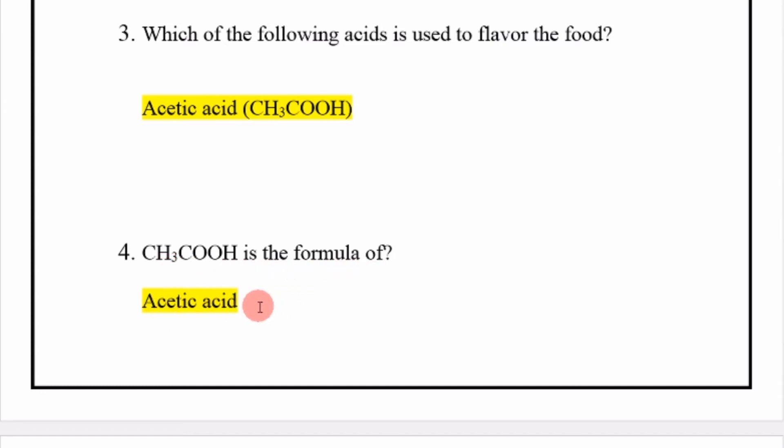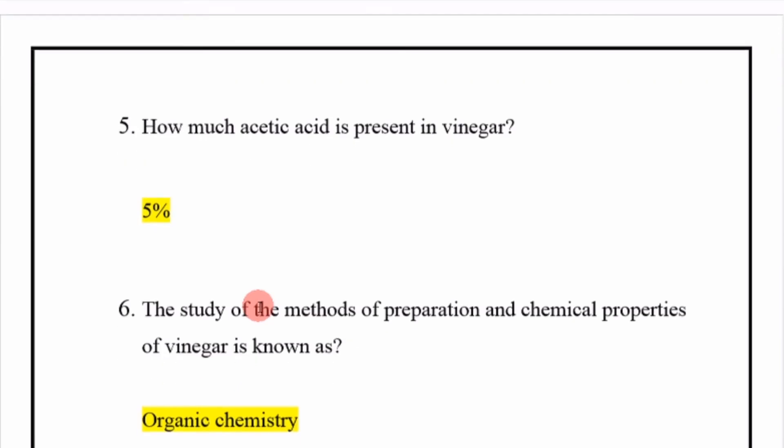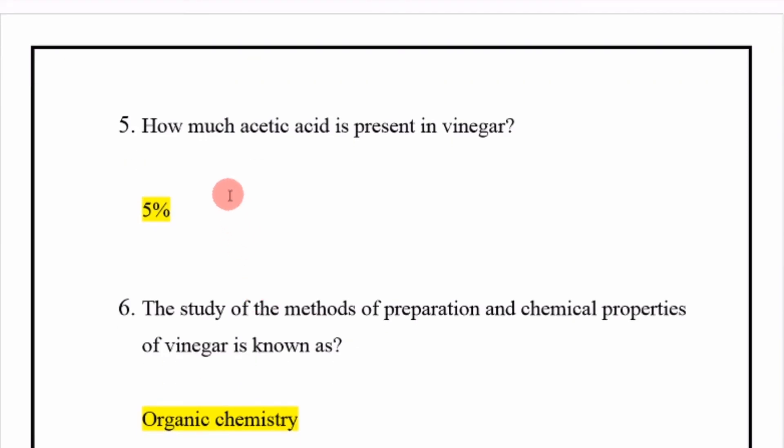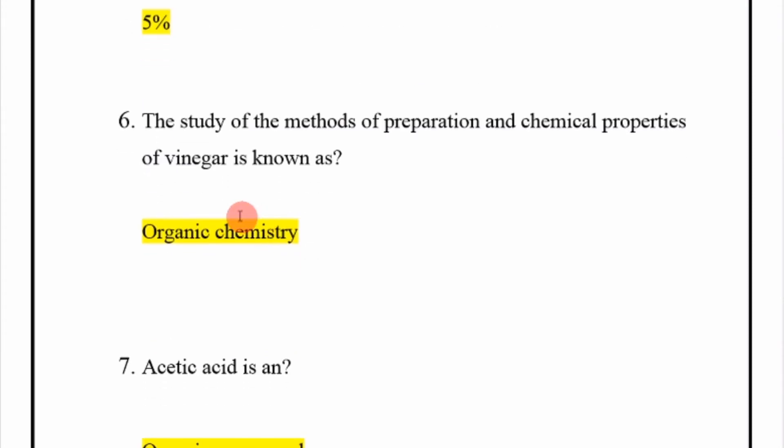Next, how much acetic acid is present in vinegar? 5%. How much acetic acid is present in vinegar? 5%.